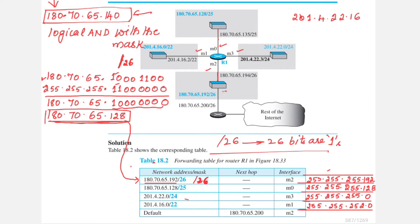Since it does not match, the router tries the same operation with the second entry, which uses the mask /25. In these entries, the mask value may be shown in slash notation such as /26, or sometimes in decimal notation. For /26 it is 255.255.255.192.